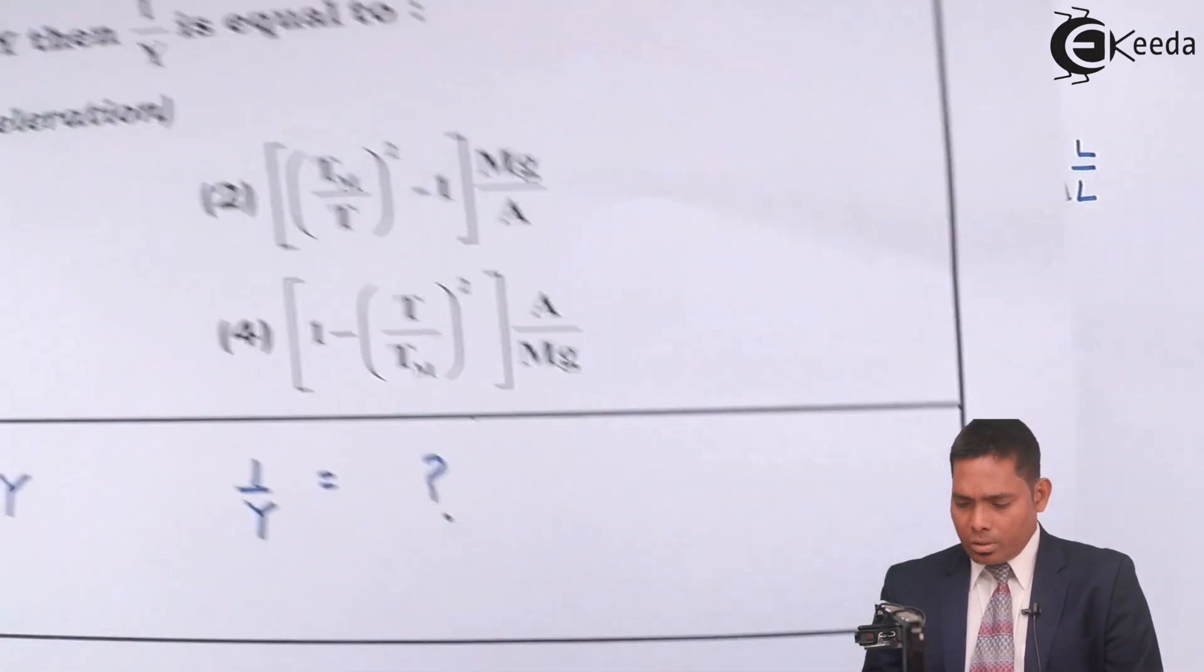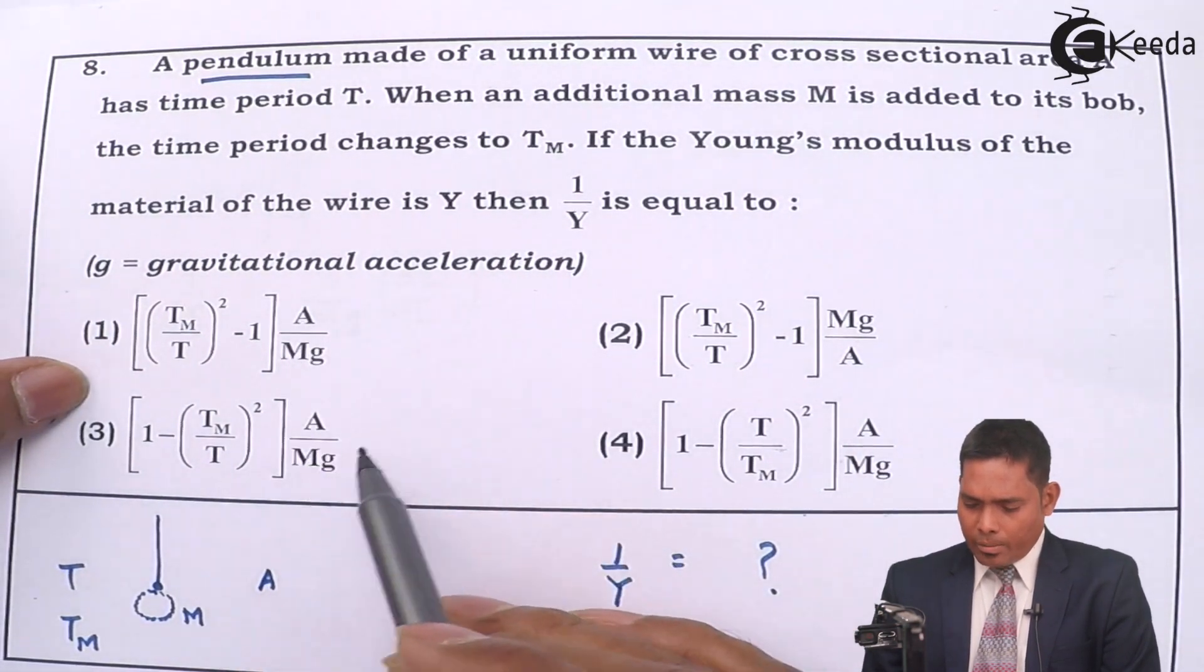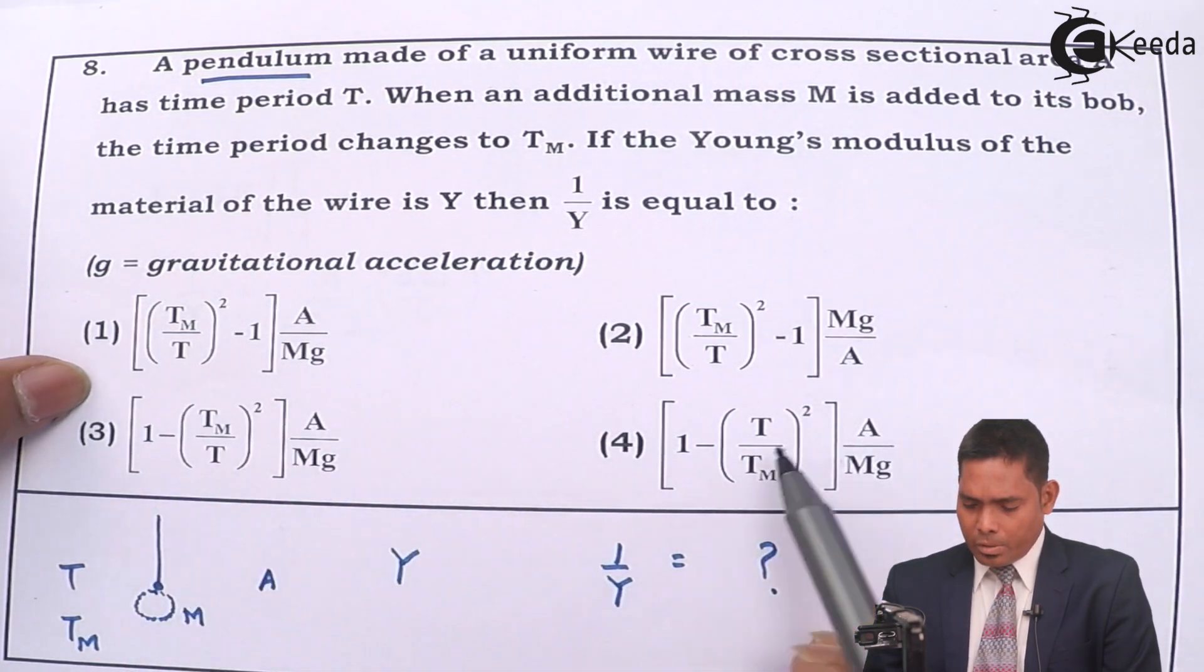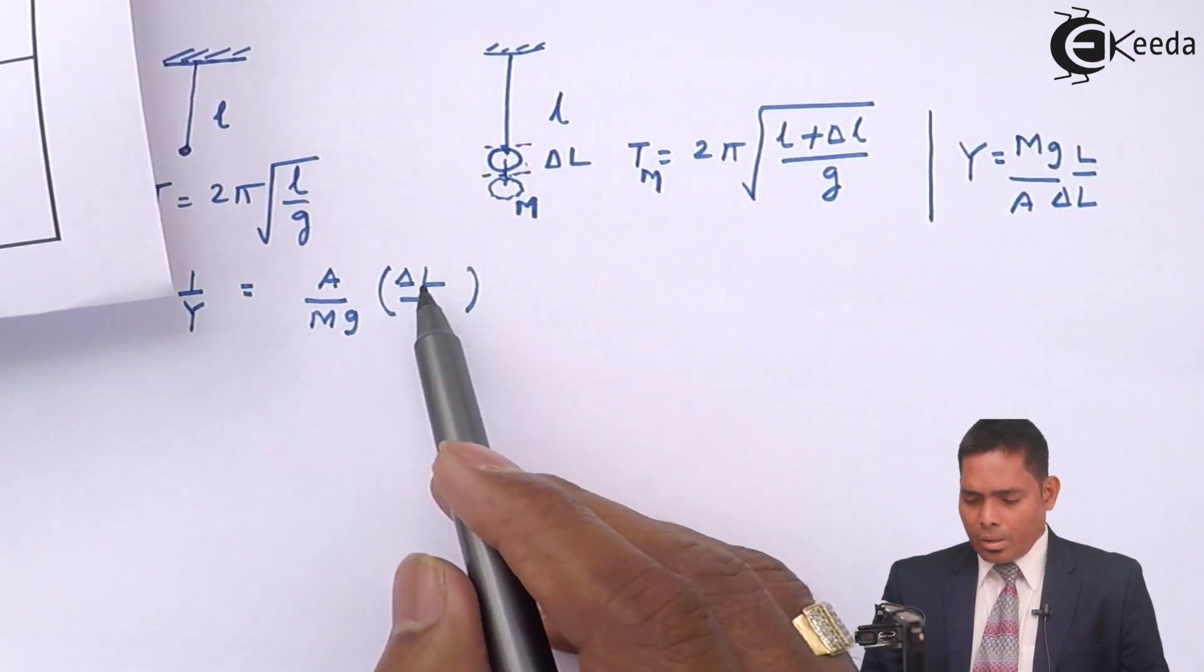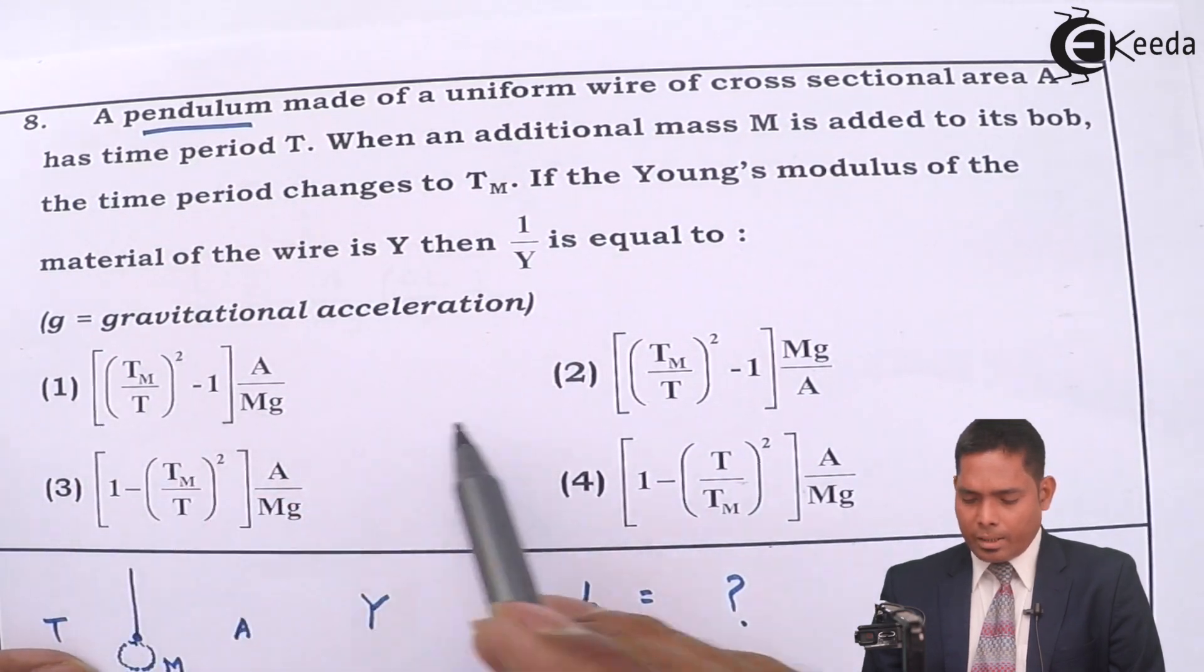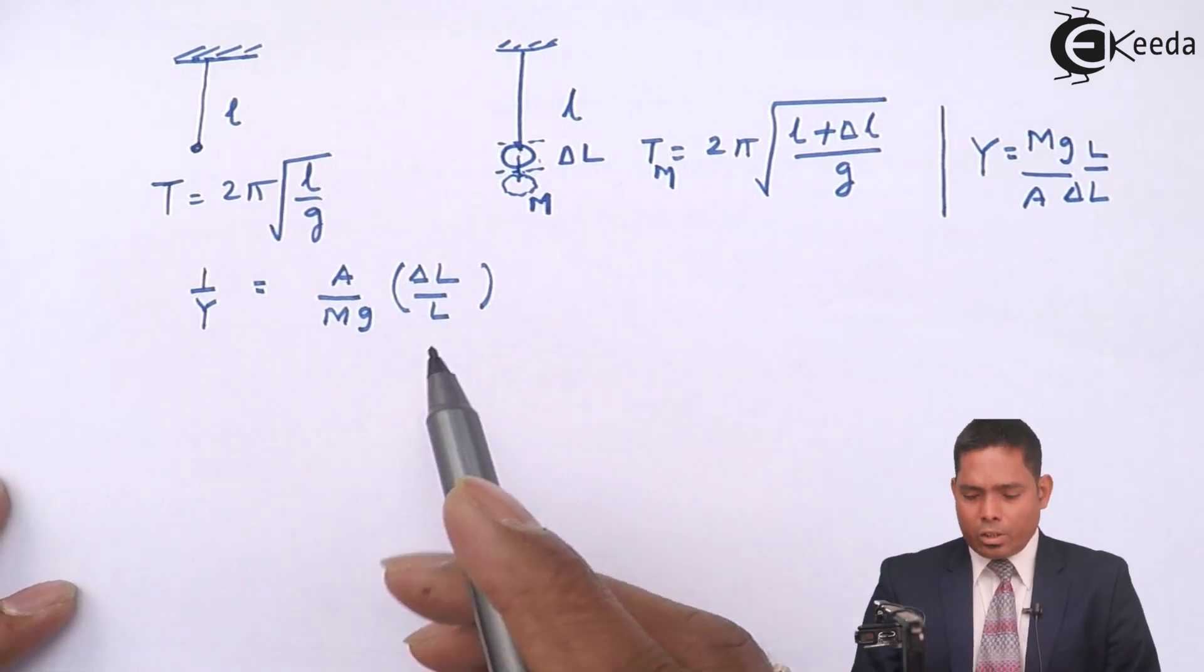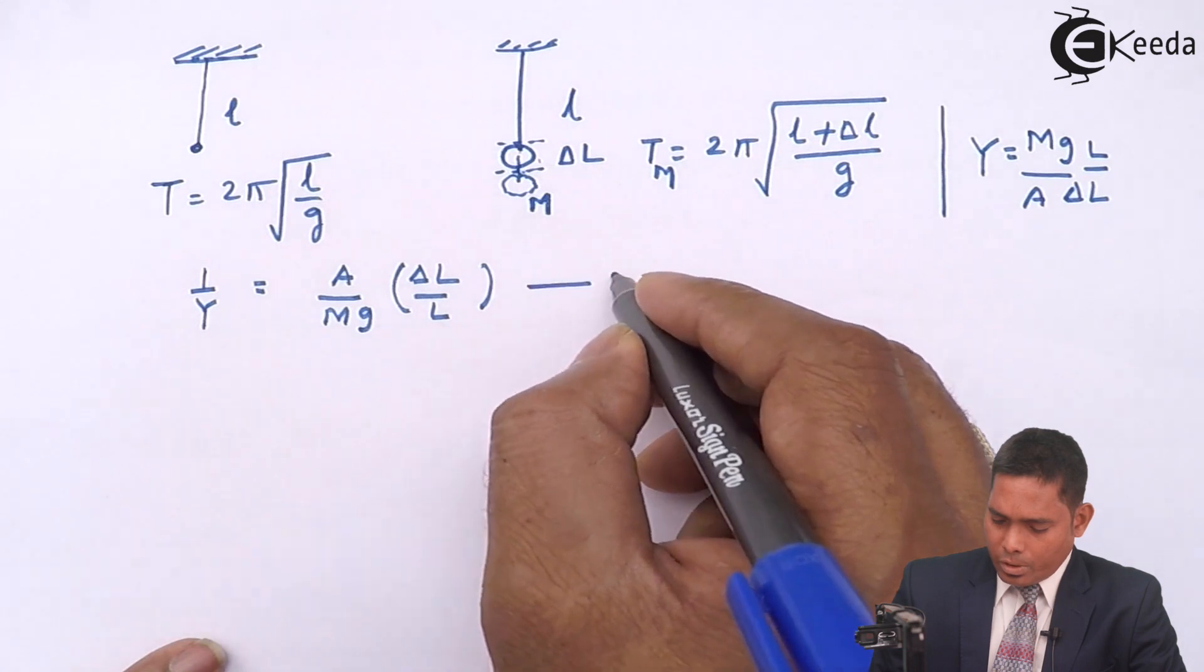Now, if we see the options, 1 by Y is A by Mg in all three options. Here Mg by A is not the answer. This will be A by Mg. But then delta L by L part is replaced by this, something like that. So we will also replace the delta L by L part in terms of T and Tm.